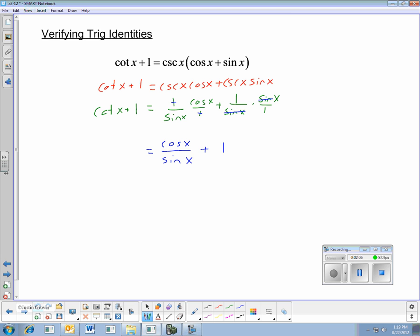And then lastly, I remember that cosine x over sine x is cotangent x and plus 1. And that is what I was trying to get the whole time. So the trig expression is verified.